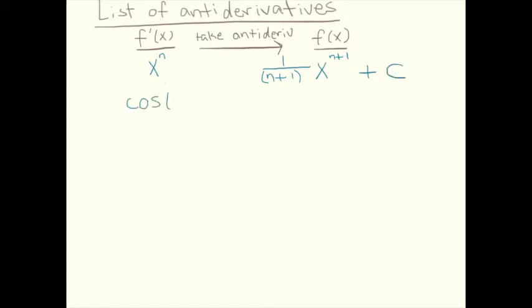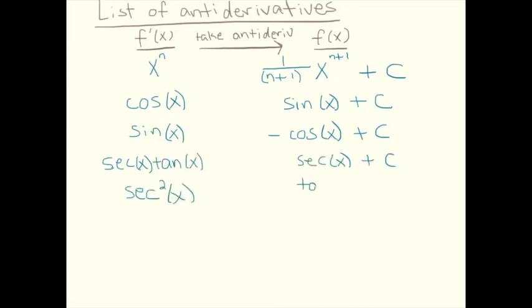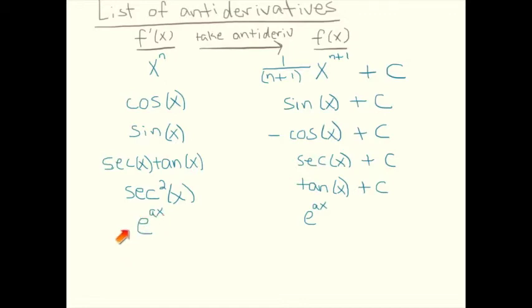Suppose a derivative equals cosine — the original function is sine plus C. How about sine? The answer is negative cosine plus C, because the derivative of cosine is negative sine, so we put an extra minus sign in front to cancel that, giving total derivative of just sine. The antiderivative of secant times tangent is secant, and secant squared gives tangent. For e to the ax, exponentials are derivatives of themselves, but by the chain rule, the derivative of e to the ax is a times e to the ax, so I put 1/a in front so the a's cancel, giving e to the ax over a plus C. For 1 over x, the antiderivative is ln of the absolute value of x.